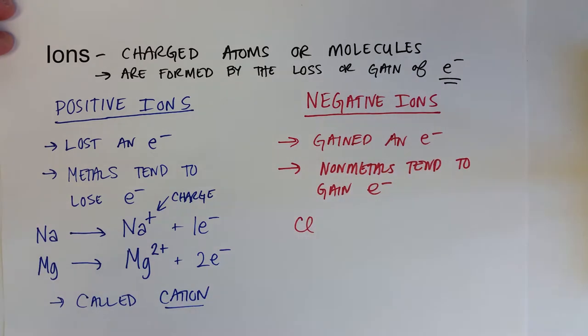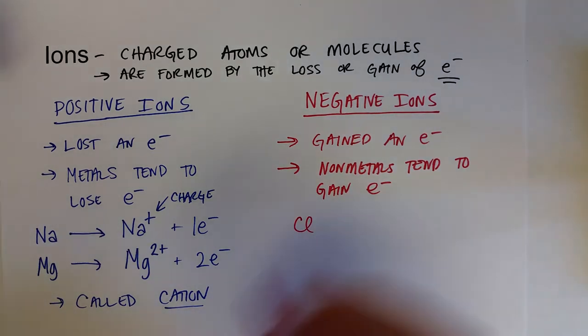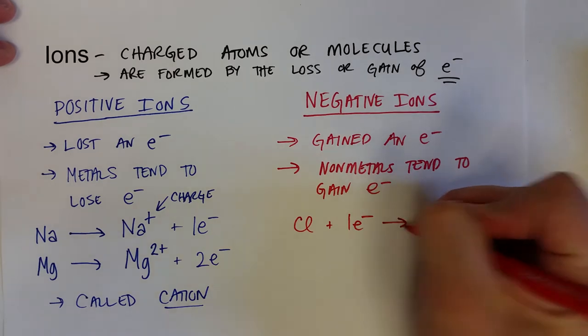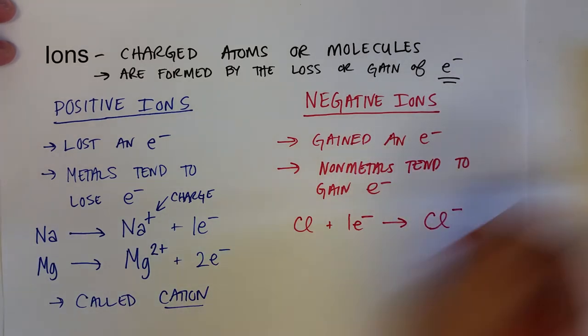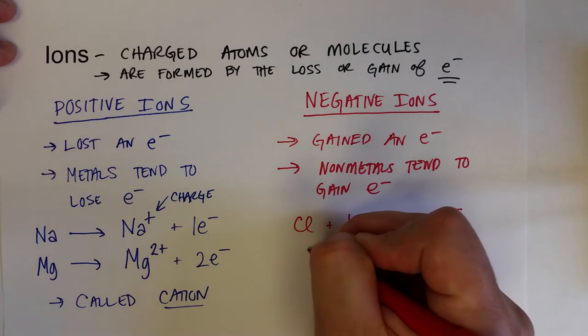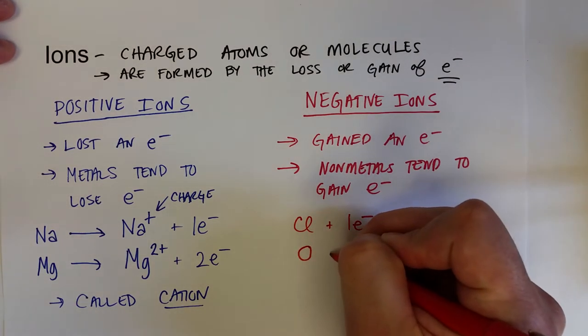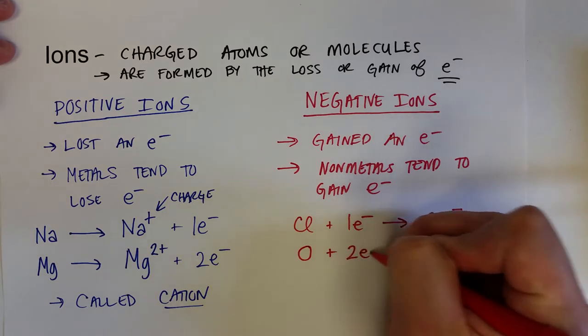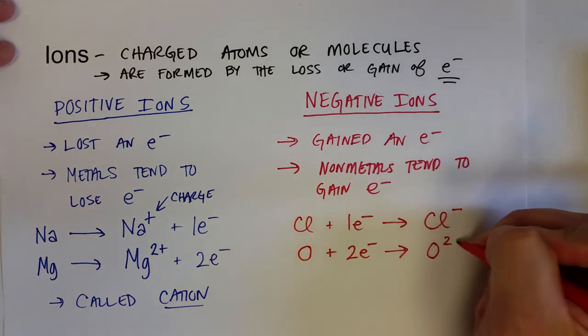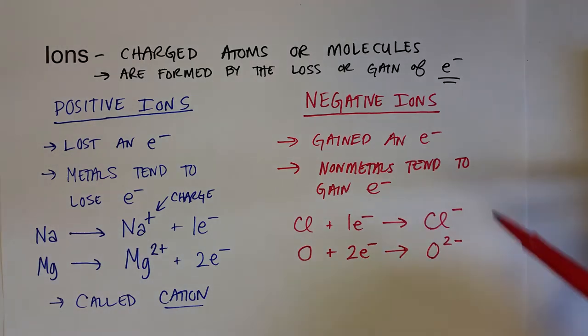And so a good example for that would be the most common counterpart to sodium, and that is chloride. Chlorine atom gains one electron to form the chloride ion, Cl minus. Oxygen, when it reacts with metals, it likes to gain two electrons to form the oxide ion with a two negative charge. And again, we don't have to write the one for a negative one charge, but anything higher, you do have to write the number.